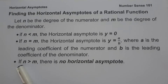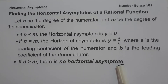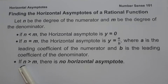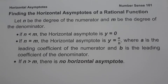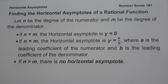And lastly, if n is greater than m, there is no horizontal asymptote. But if the degree of the numerator exceeds the degree of the denominator by exactly one, we have an oblique asymptote. To find the oblique asymptote, simply divide the numerator by the denominator and disregard the remainder. These are the basic concepts you need to remember in order to find the horizontal asymptotes of a rational function.